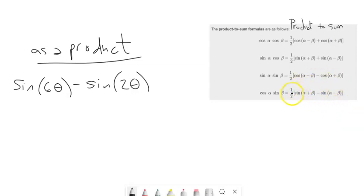So I have sine of something minus sine of something. So sine minus sine happens here. Now, notice that this is like one half. I don't have a one half out here. So what I could do is multiply both sides of this by two. So just sine minus sine is the same as two of cosine of something times sine of something.